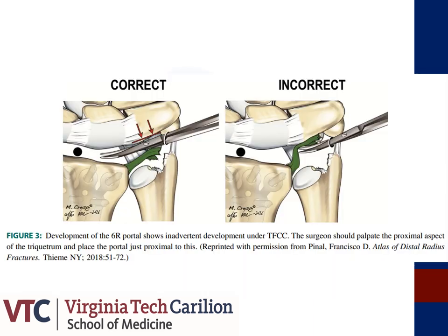This slide recalls the standard 6-R and 6-U portals. The 6-R portal is developed radial to the ECU tendon and is utilized for visualization and instrumentation of the ulnar aspect of the wrist joint, while the 6-U portal located ulnar to the ECU tendon is predominantly utilized for outflow. The image depicts correct and incorrect development of the 6-R portal. It is critical that the surgeon palpate the proximal aspect of the triquetrum and place the 6-R portal just proximal to this to ensure the portal is distal to the TFCC.